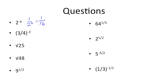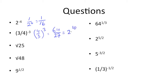Next off, we have 3 over 4 to the negative 3. All we need to do is take the reciprocal again, since this is a negative exponent, and we get 4 over 3 to the 3rd power. And that means we get 4 times 4 on top, which is 16, times 4 is 64, over 3 times 3 times 3, which is 9 times 3 is 27. So that simplifies out to 64 over 27.